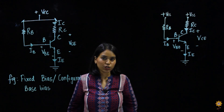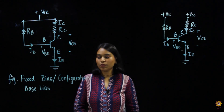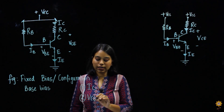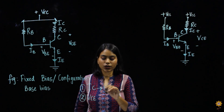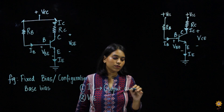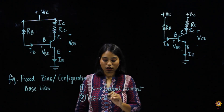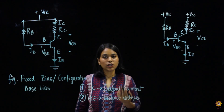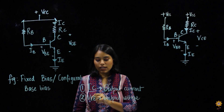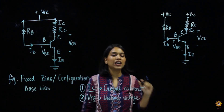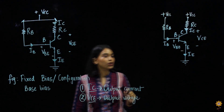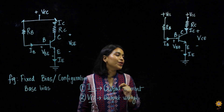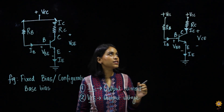When we do the analysis of this fixed bias configuration, or any biasing configuration, we have to find two parameters: IC and VCE. IC is the output current and VCE is the output voltage. To find these two values from the circuit, we need to apply KVL — Kirchhoff's Voltage Law.